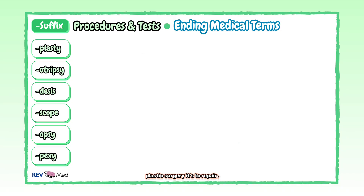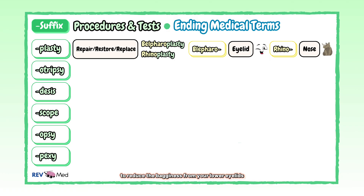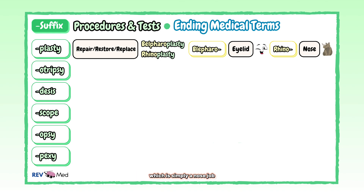Suffix "-plasty" — think plastic surgery. It's to repair, restore, replace. We have examples like blepharoplasty and rhinoplasty. If you watched the previous lesson, you'll quickly identify "blepharo" is the root word for eyelids. So blepharoplasty is the procedure to reduce bagginess from your lower eyelids and remove excess skin from your upper eyelid. And rhino — you remember as the horn of the rhino, the nose — which is for rhinoplasty, simply a nose job.